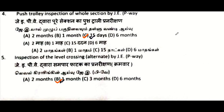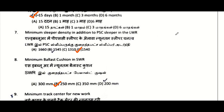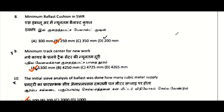Push trolley inspection of the whole section by JE P-way: within 15 days. Inspection of level crossing alternate by JE P-way: one month. Inspection of night patrol by JE P-way: 15 days. Minimum sleeper density in addition to PSC sleeper in LWR: 1540.